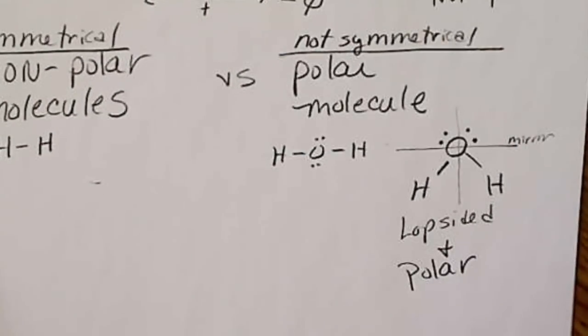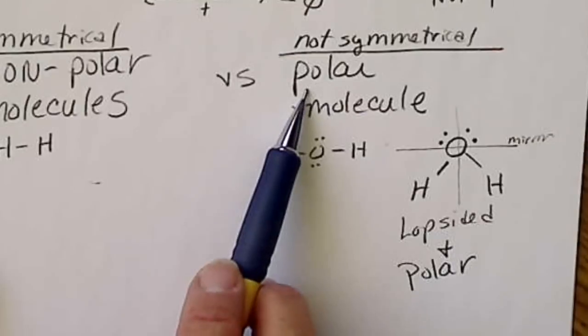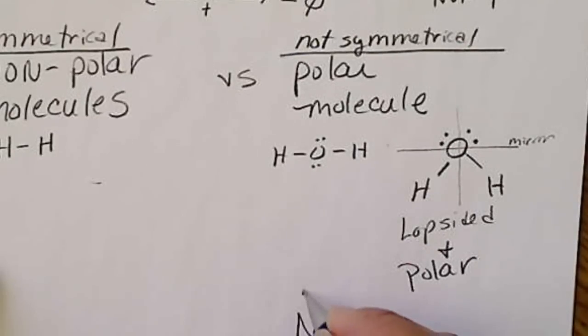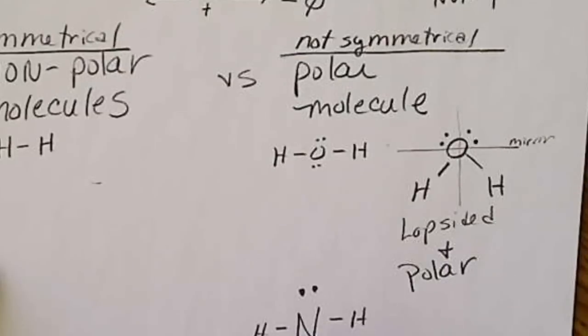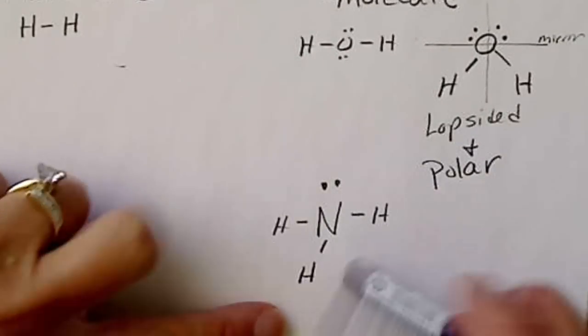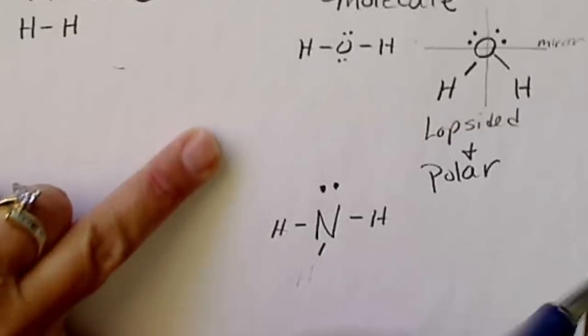Any time a molecule has a lone pair on the central atom, it's going to be lopsided. The electrons are going to be more on one side of the molecule than the other. This is an example of NH3.